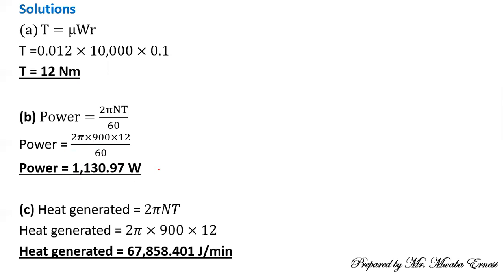For heat generated per minute, we don't divide by 60 — we use: Heat = 2πNT, where N = 900 and T = 12. Multiplying these gives the result in joules per minute. Journal bearing calculations are pretty straightforward, and as long as you apply the formulas correctly and do a good analysis of your mechanism, you'll do well.